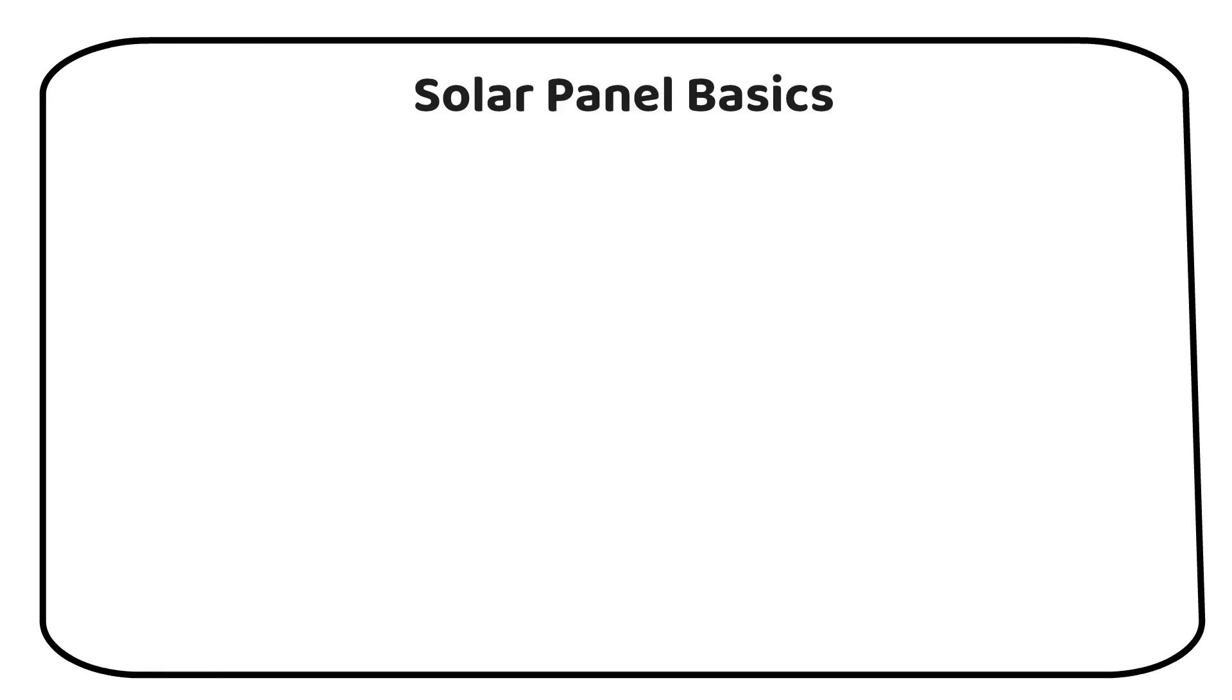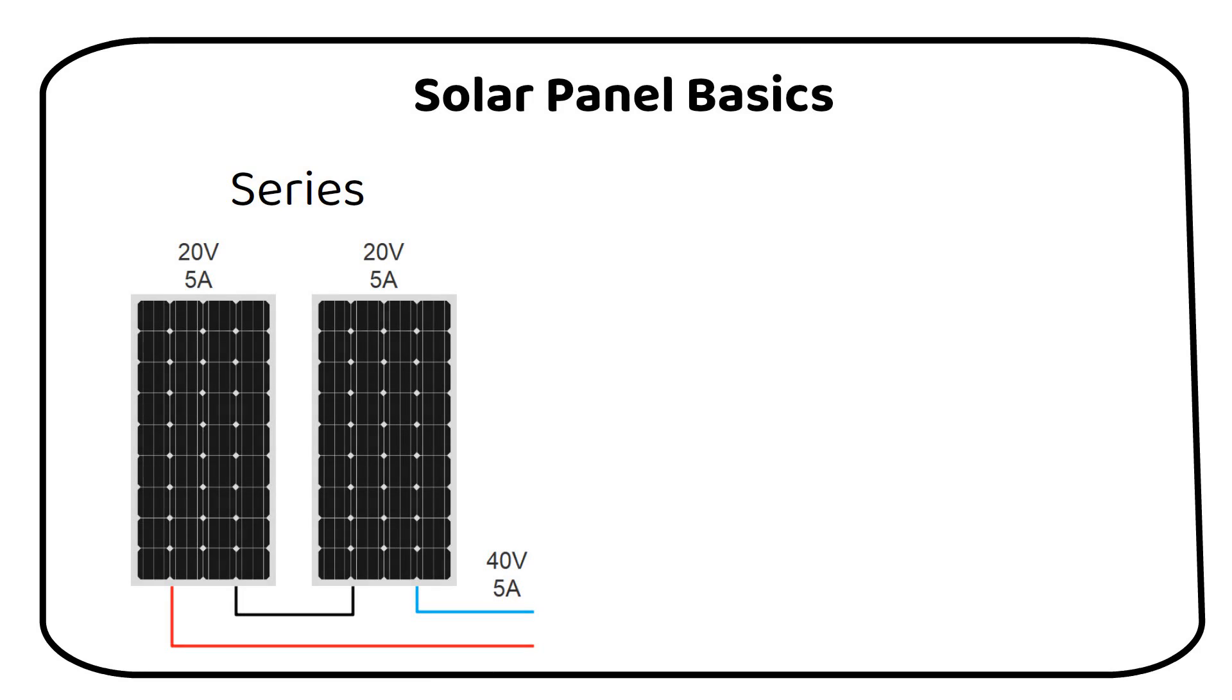We have to recap some essential knowledge first. When you connect solar panels in series, the voltages of each panel add up, but the current remains the same as a single panel. This setup is ideal for increasing the system voltage. I recommend to always wire in series up to the maximum allowable input voltage of the charge controller.